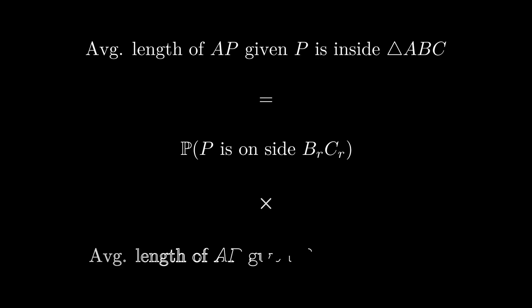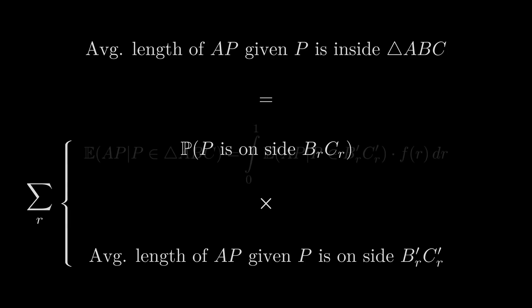Once we are clear on that idea, the expected value that we are looking for can be written as the expected value of AP given P lies in B'C' times the probability of P lying in B'C' over all possible values of R.